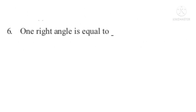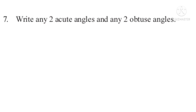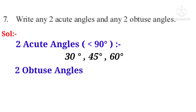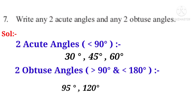Now sixth problem: one right angle is equal to how many degrees? It is 90 degrees. Now seventh problem: write any two acute angles and any two obtuse angles. Solution. Acute angles are less than 90 degrees — for example, 30 degrees, 45 degrees, 60 degrees, all are less than 90 degrees. Obtuse angles: 95 degrees, 120 degrees, 175 degrees — these are all greater than 90 degrees and less than 180 degrees.